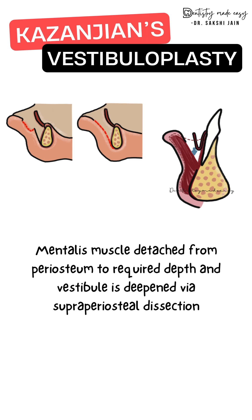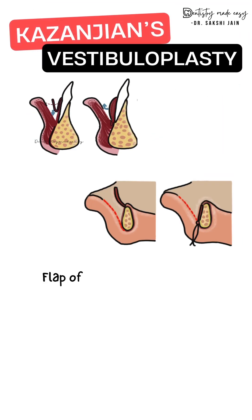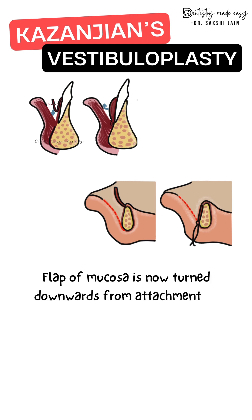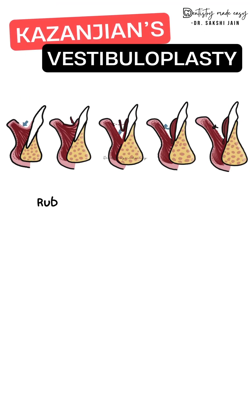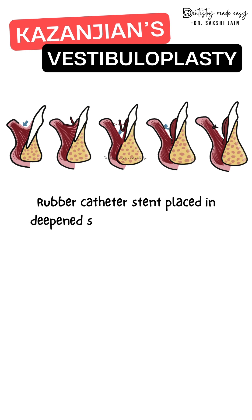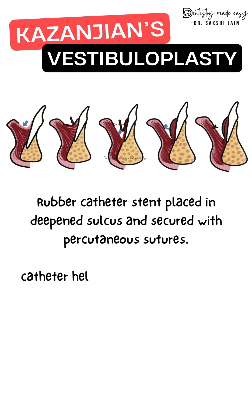The raised mucosal flap is turned downwards and placed against the periosteum, then fixed with sutures. By turning the flap downward, the vestibule is deepened. A rubber catheter stent is then placed in the sulcus and secured with percutaneous sutures. This stent holds the flap in its new position and maintains the vestibular depth that has been achieved.